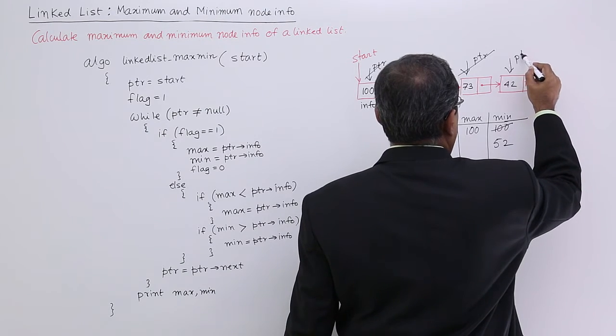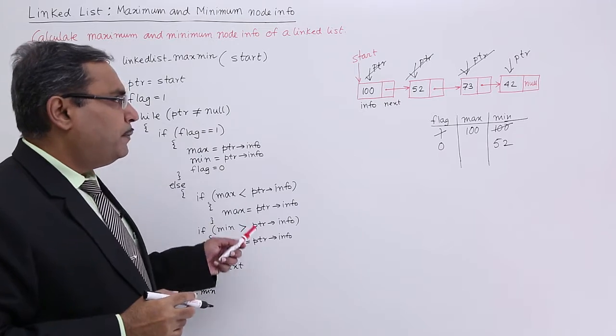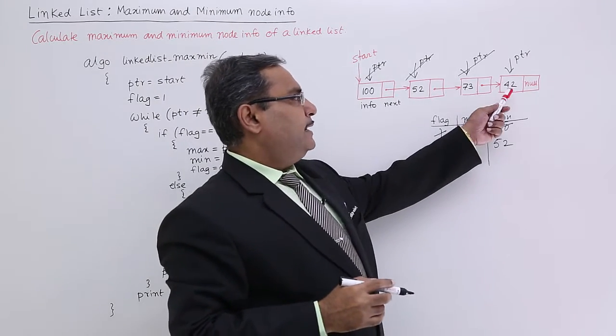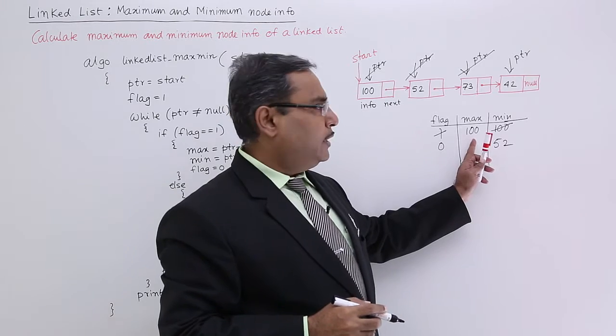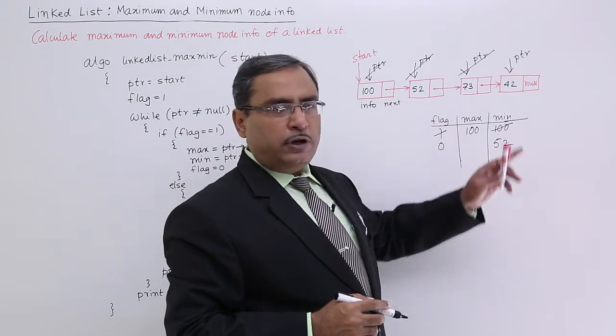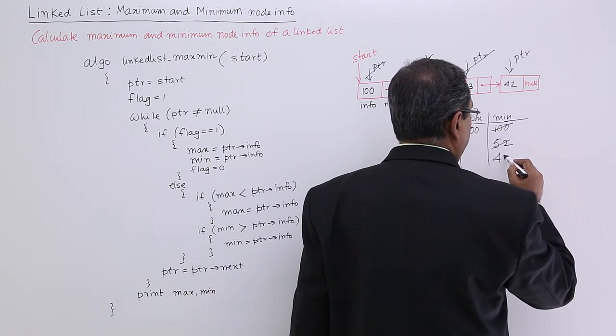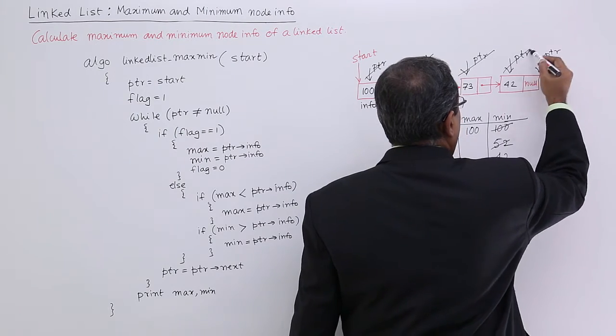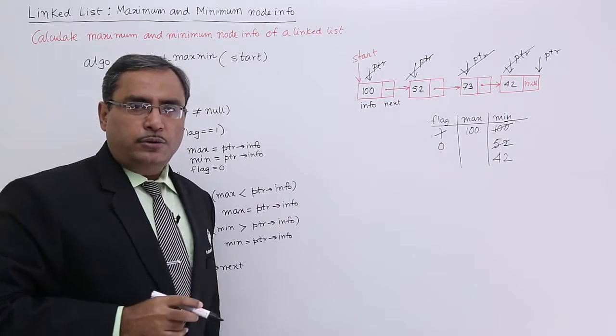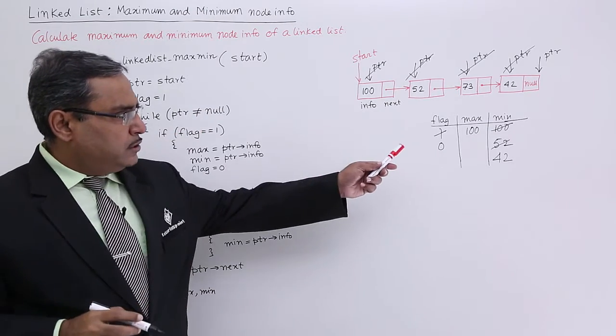Now again it will go for comparison. 100 is less than 42 is not true, so max is not getting updated. 52 is greater than 42 is true, so 52 must be updated by 42. And now ptr will be pointing to null, so the algorithm will get terminated. It will print max and min—it will print 100 and 42.